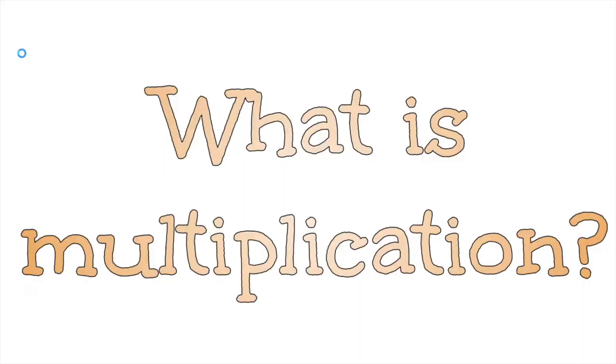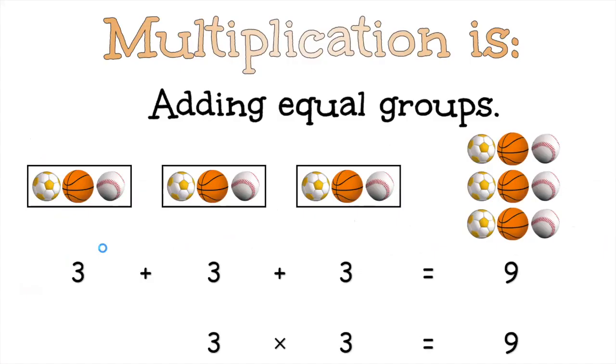So let's start off with the question, what is multiplication? Multiplication is adding equal groups. For example here we have a group of three plus a group of three plus a group of three to equal nine.